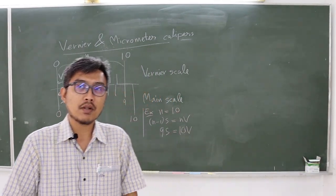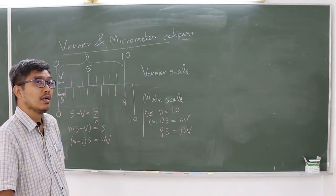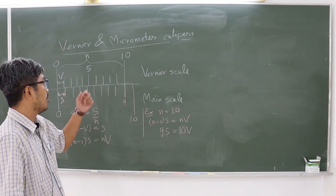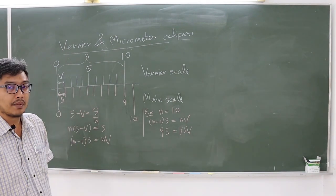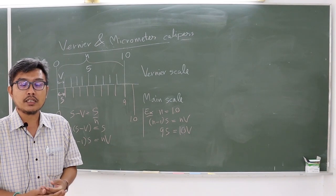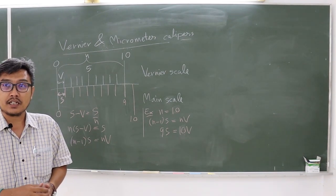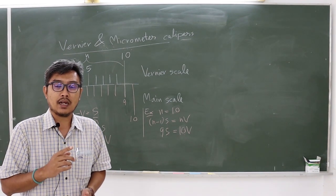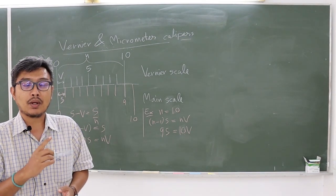Today I will talk about vernier and micrometer calipers. This is experiment one, about the instruments that we often use in physics measurement. Students must pay attention to how to measure and use the instruments.